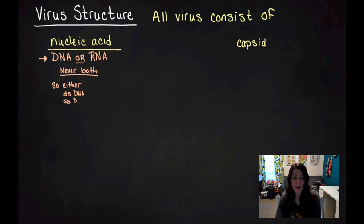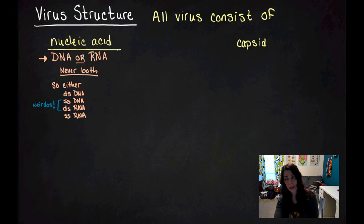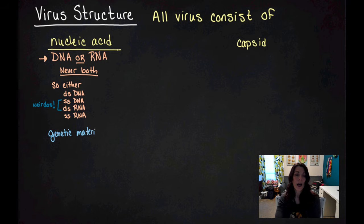That can either be double-stranded DNA, single-stranded DNA, double-stranded RNA, or single-stranded RNA. And for those of you that remember your ninth grade biology, you might remember that a couple of these are weirdos and that we don't typically see them for any prolonged period of time in normal cellular structures.